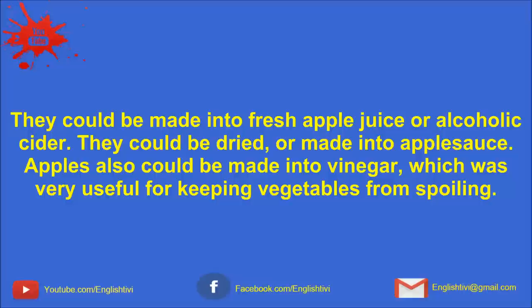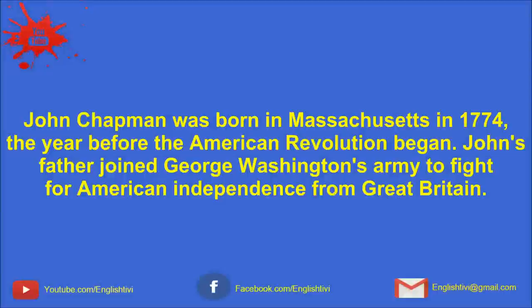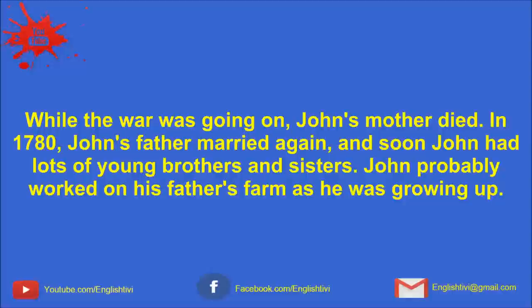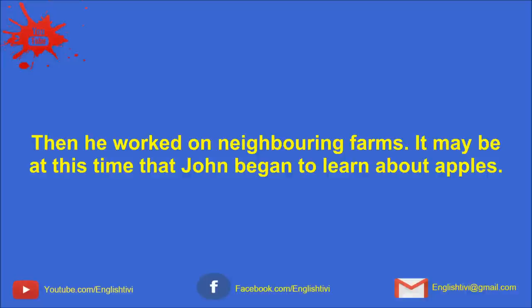Native Indians were often helpful in teaching the settlers how to find food, but sometimes there were no Indians nearby or they were hostile. John Chapman is famous today because he helped the early settlers grow one important product: apples. Apples could be eaten fresh in the fall or stored through the winter. They could be made into fresh apple juice or alcoholic cider. They could be dried or made into applesauce. Apples also could be made into vinegar, which is very useful for keeping vegetables from spoiling. John Chapman was born in Massachusetts in 1774, the year before the American Revolution began.